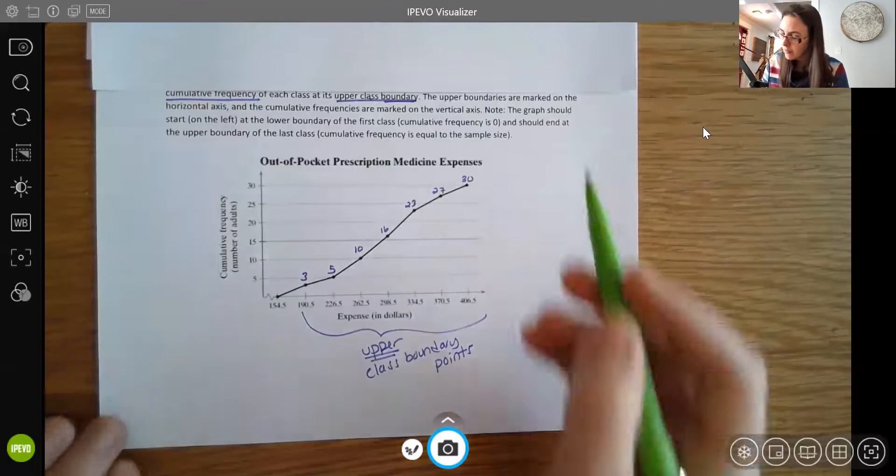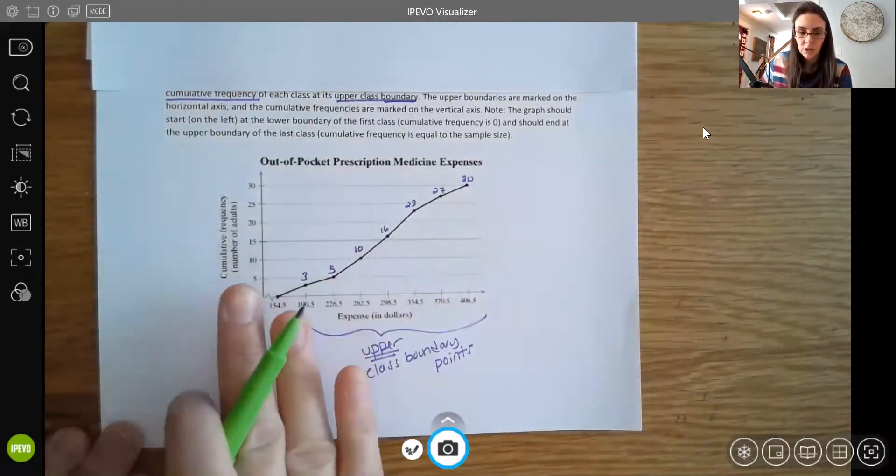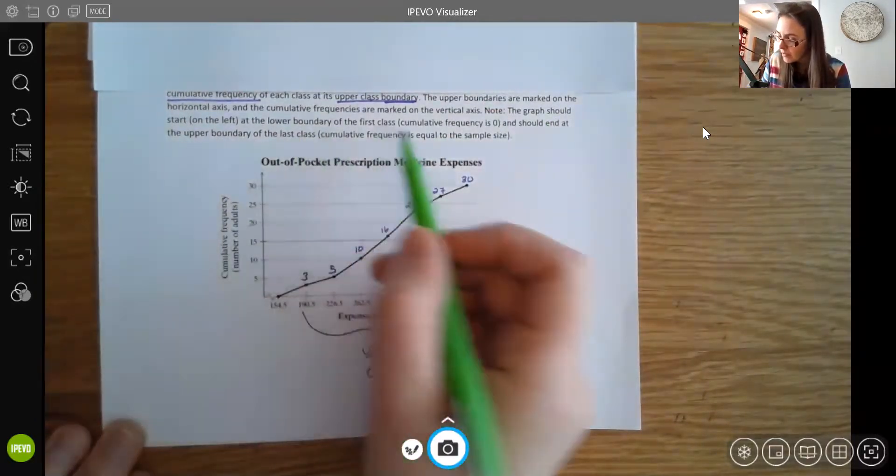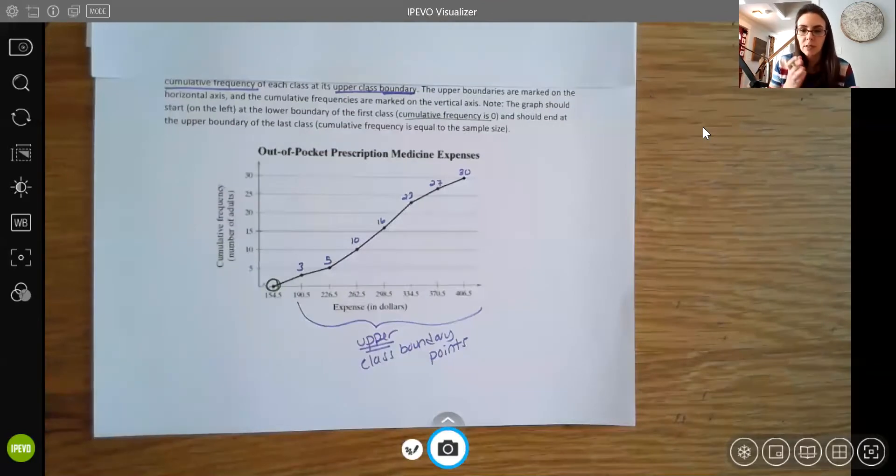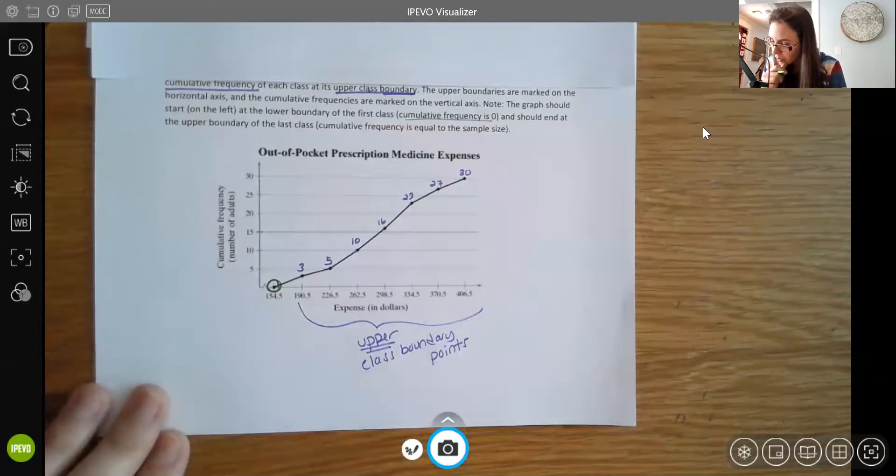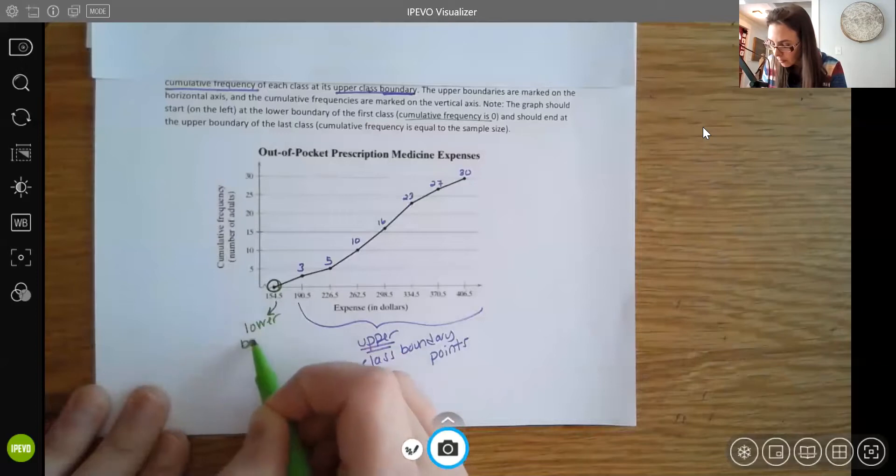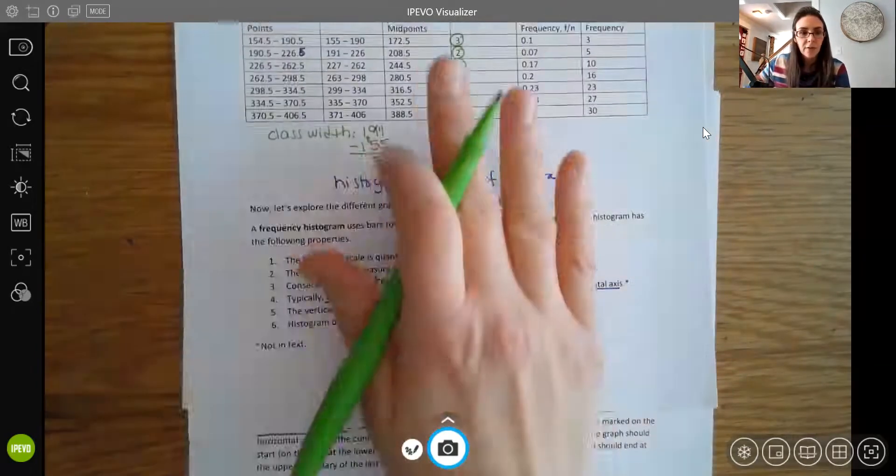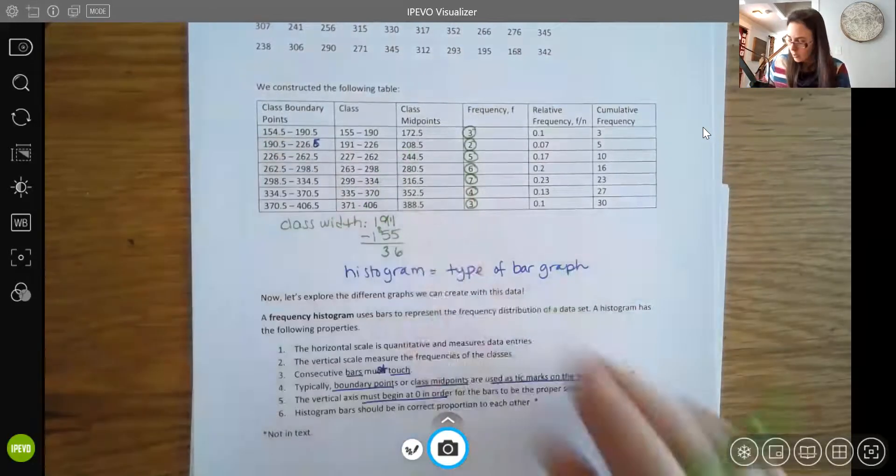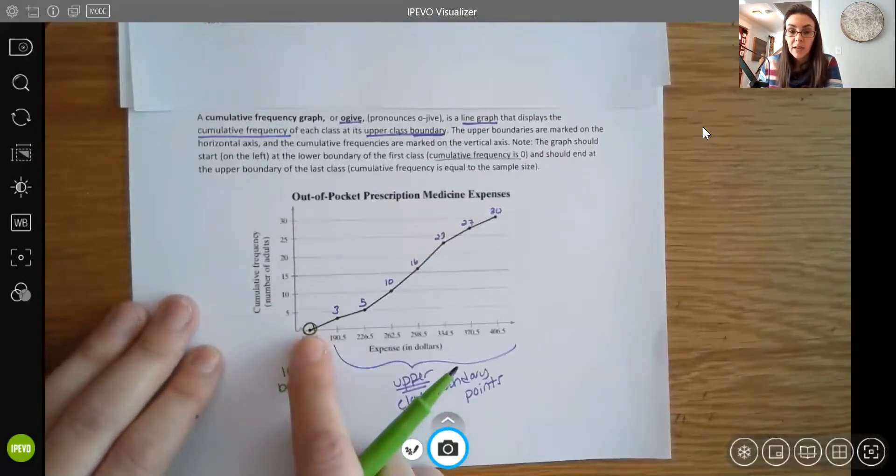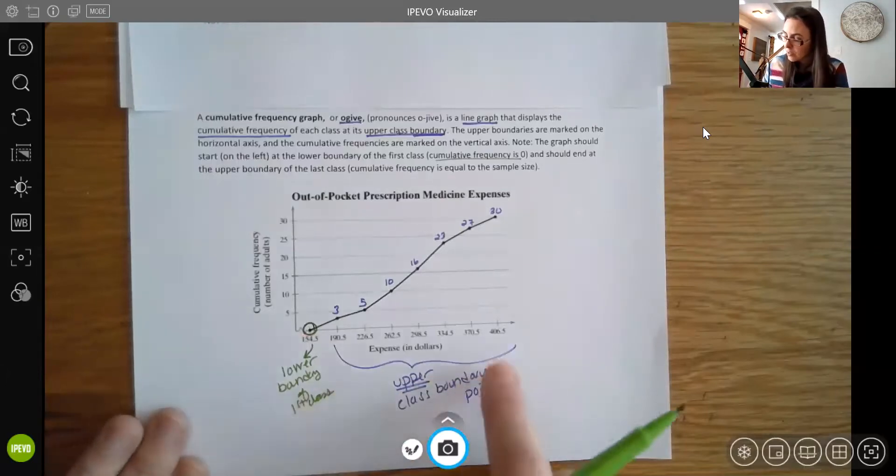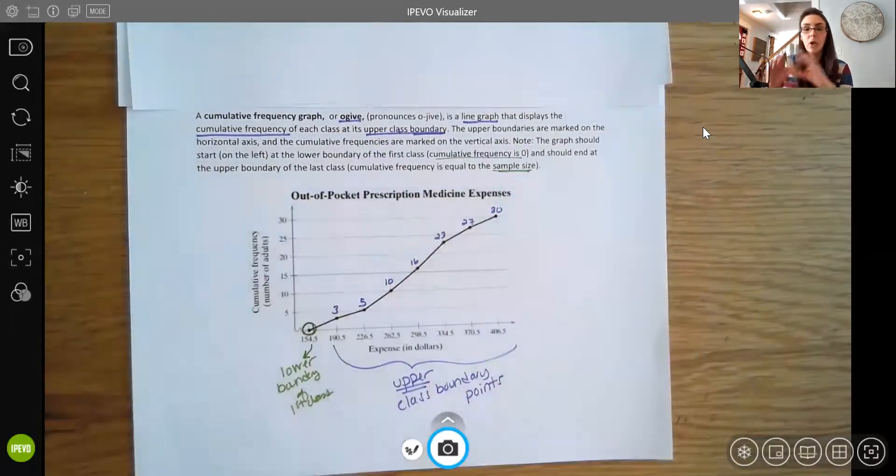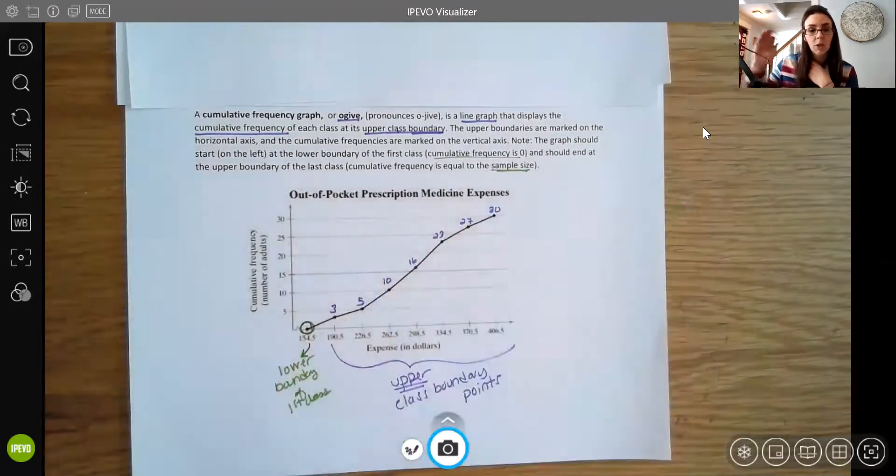One other thing to note is the graph should start on the left. It should grow to the right, be an increasing graph. And the lower boundary of the first class for the cumulative frequency is zero. We do start at zero in this case because you would start with zero objects or zero data points. So if you look back up here, our first boundary point was the 154.5. So that's what they're using here as their starting point. Theoretically at that point, you're before the classes, so you would have no data. And then at the end, your final value should be equal to the sample size. In this case, we have 30 data points. So your final height should be at that 30.